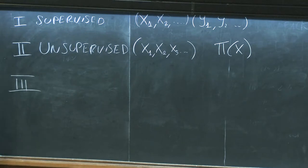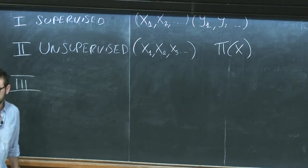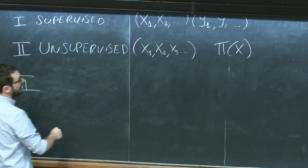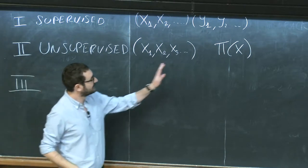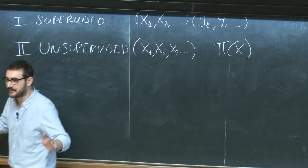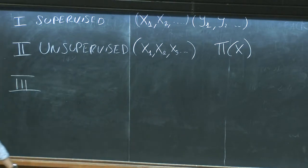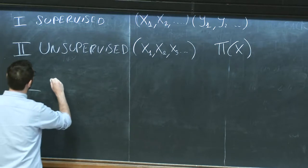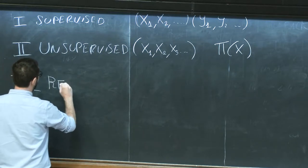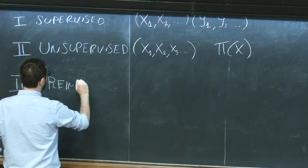In the third case — where artificial intelligence really goes wild — you don't have samples, you don't have labels, you have nothing. You just have a goal you want to solve. This is called reinforcement learning.